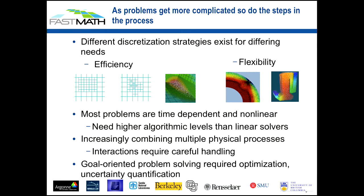Most problems that we deal with are time-dependent and also nonlinear, which means we need much higher algorithmic kinds of solvers than just solving a big matrix. Increasingly, we're interested in combining different physical processes together. In climate modeling, for example, you want to couple what's going on in the ocean with the atmosphere, vegetation, clouds, and sea ice — a very complex interconnected system, each potentially represented by different sets of PDEs with different domains, and you have to figure out how to couple those together in ways that are accurate and stable.